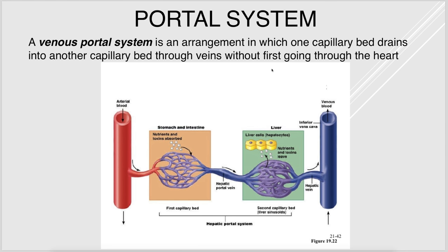A portal system is when you have two capillary beds in a row joined by a vein, so a capillary bed drains into another capillary bed without going through the heart first. There are two really big examples in the body, but just understand what a portal system is.